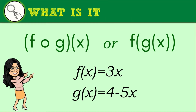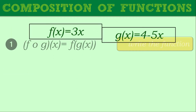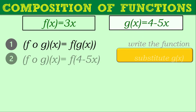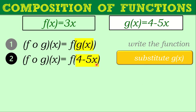Let's solve f of g of x. Given f of x equals 3x and g of x equals 4 minus 5x, follow these steps. Step 1: write the function in notation form — f composed with g of x equals f of g of x. Step 2: substitute g of x, meaning replace g of x with its expression, 4 minus 5x.